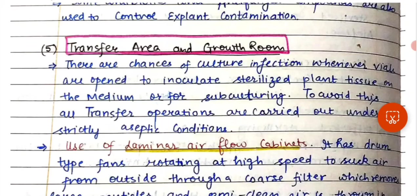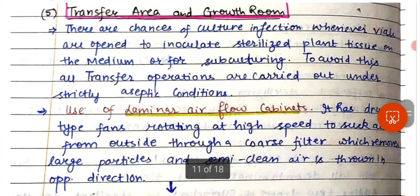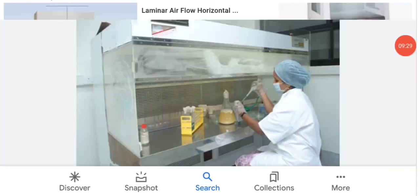Next is transfer room or growth room sterilization. There are chances of culture infection whenever the vials are opened to inoculate sterilized plant tissue on the medium or for subculturing. To avoid this, all transfer operations are carried out under strictly aseptic conditions using laminar airflow cabinets.